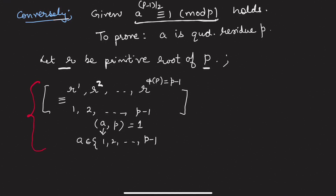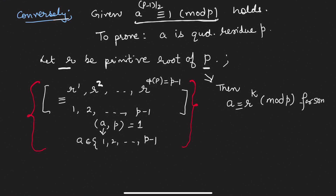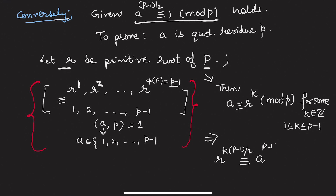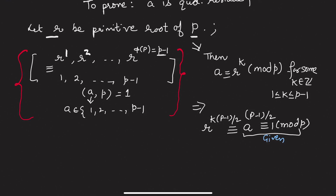Since r is a primitive root of p, for some integer k with 1 ≤ k ≤ p-1, we have a ≡ r^k (mod p). Raising both sides to the power (p-1)/2, we get a^((p-1)/2) ≡ r^(k(p-1)/2) (mod p). Since a^((p-1)/2) ≡ 1 (mod p) by assumption, this gives r^(k(p-1)/2) ≡ 1 (mod p).